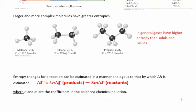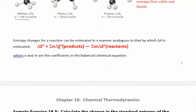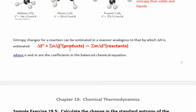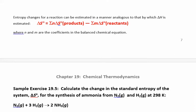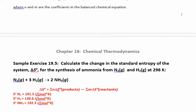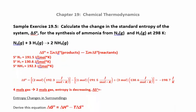Here's our equation: products minus reactants. N and M represent the moles — the stoichiometric coefficients — of each substance, so you need to take those into consideration. Everything in the table is for one mole, so if you have a coefficient of two in your equation, you want to multiply by two.